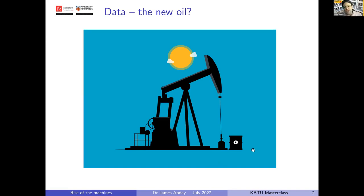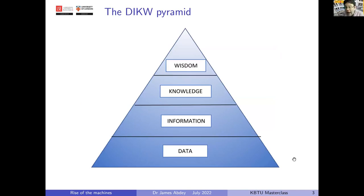If you imagine crude oil extracted in its raw form from the ground, in its rawest form the oil has limited use. It's only once the oil has been through an oil refinery and transformed into something with real value add — things like jet fuel, gasoline — that it becomes useful. This pyramid, though a few decades old, conveys principles as relevant today as when it was first created. At the bottom we have data — think of this like crude oil in its raw form.